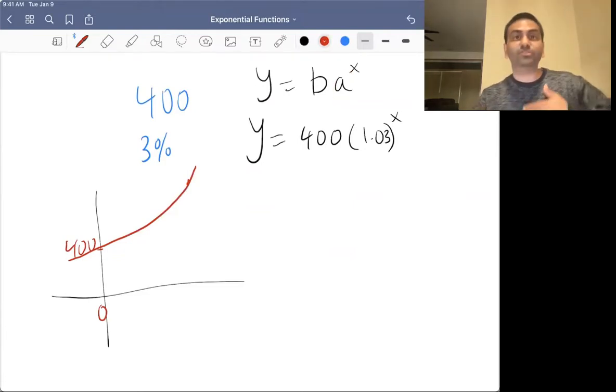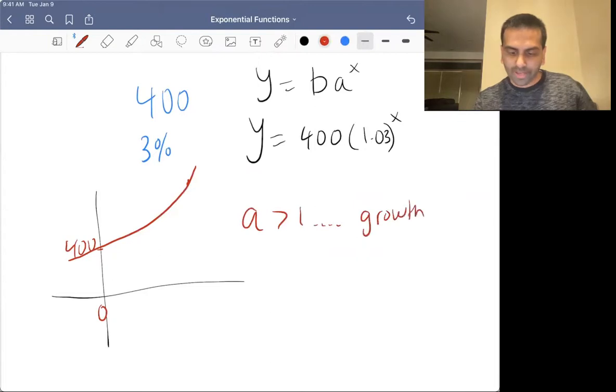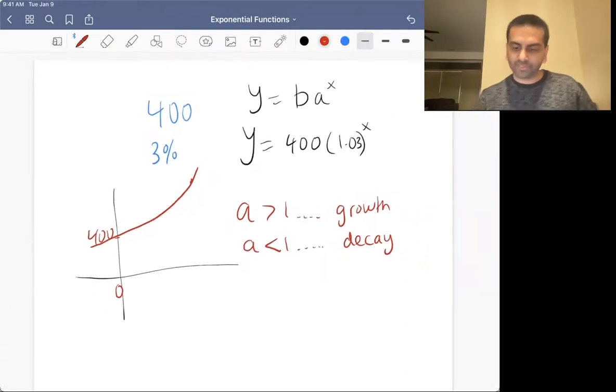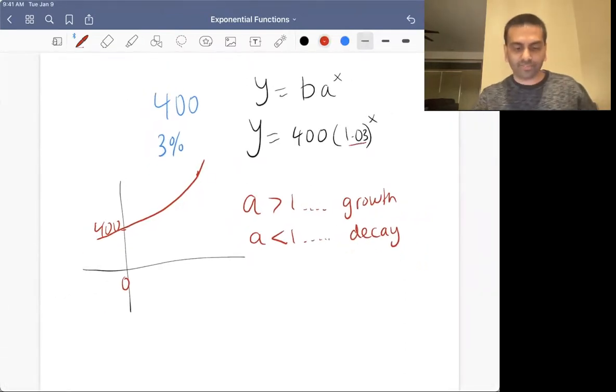For A, it's about whether it's greater than one or less than one. So if A is greater than one, that's called an exponential growth function. And if A is less than one, that's called an exponential decay function. So specifically, I said that the answer here, if it's 3% growth, the A value is 1.03.